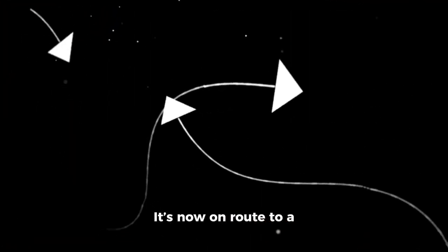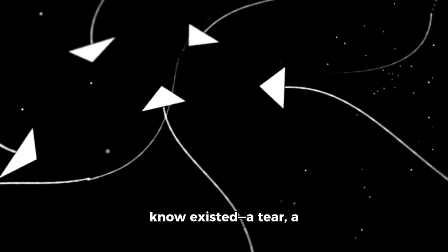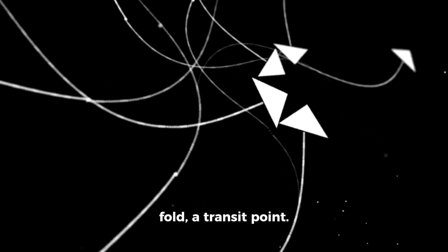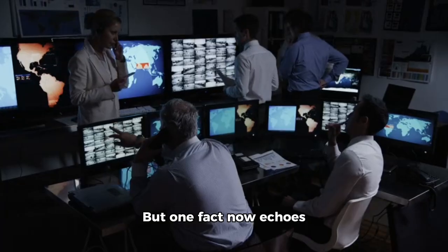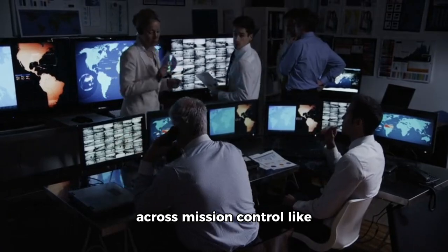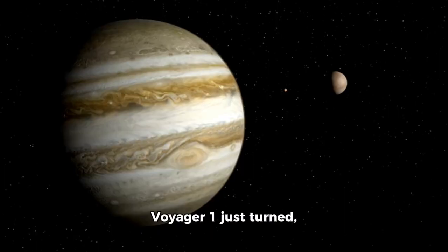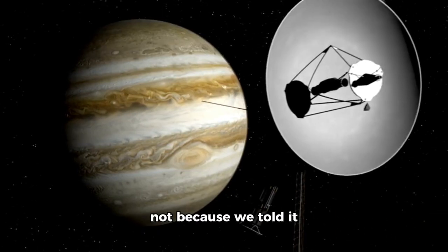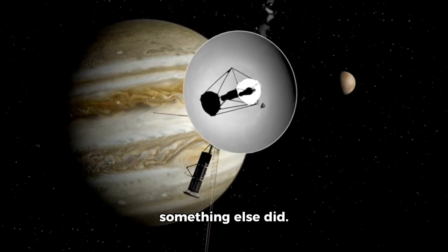It's now en route to a spatial corridor we didn't know existed—a tier, a fold, a transit point. No one knows. But one fact now echoes across mission control like a forgotten prophecy. Voyager 1 just turned, not because we told it to, but because something else did.